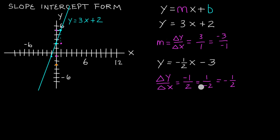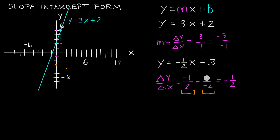We already know this point is our b — negative 3 on the y-axis — and it's part of our line. Using the first representation of the slope, we go negative 1 unit in the y direction for every positive 2 units in the x direction. From here, going down negative 1 in y brings us to a spot, then positive 2 in the x — over 1, 2 units — puts us at another point on our line. Using the alternative, we can go positive 1 in the y direction and then negative 1, negative 2 in the x direction.